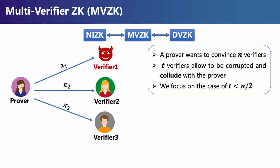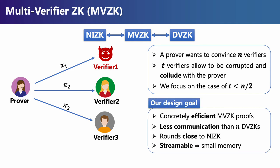We allow the adversary to corrupt up to T of the N verifiers, and these corrupted verifiers can collude with the prover. We focus on ZK where T is less than N over 2. Our goal is to design concretely efficient MIZK proofs achieving significantly less communication than running N DVZK proofs, having rounds close to NIZK, and supporting streaming the proofs to obtain small memory.